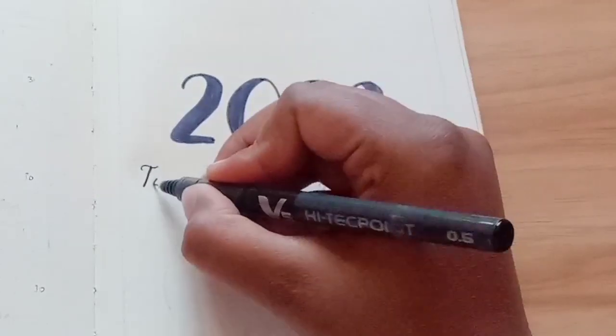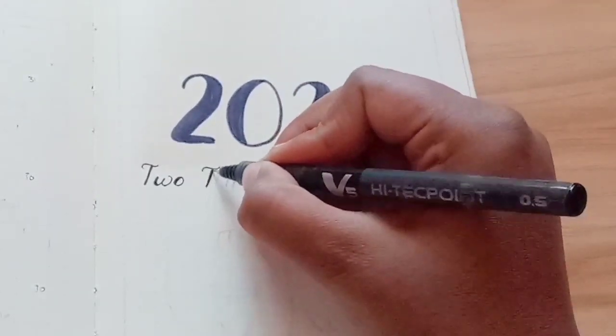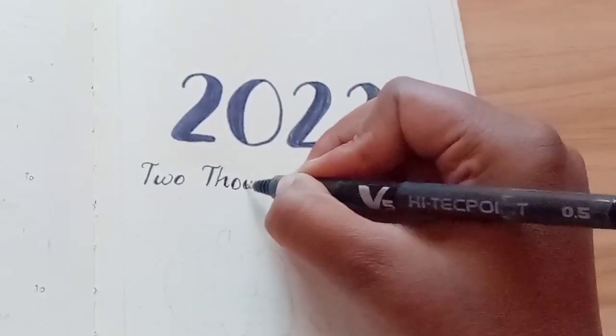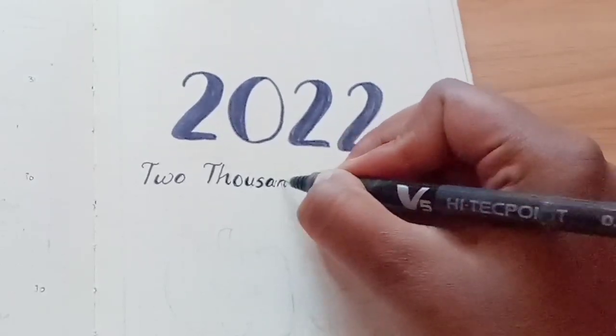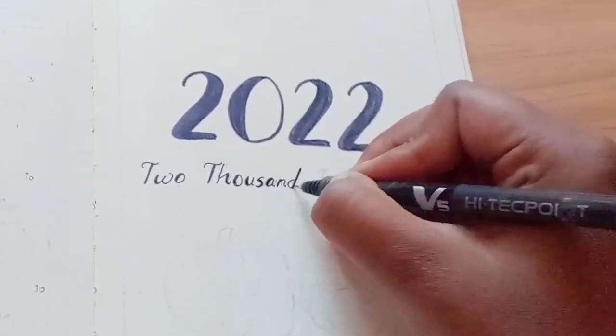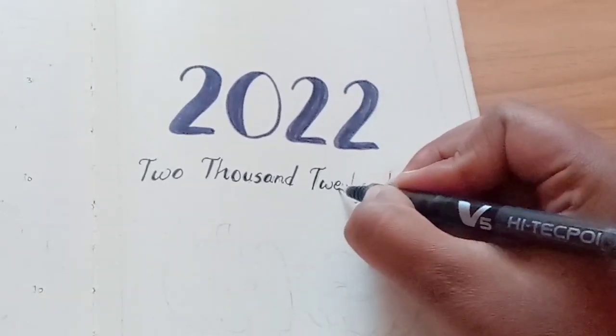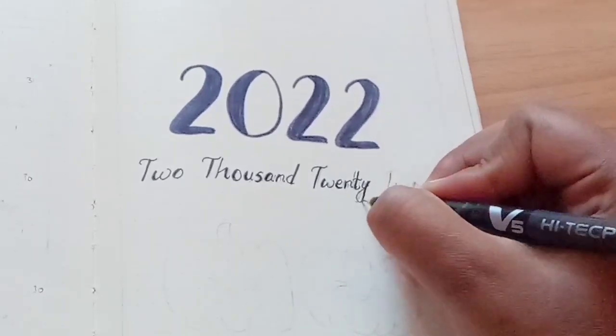Then I took my black gel pen and wrote 2022 in letters. I wanted to try out some interesting calligraphy, but clearly I'm not very good at it.